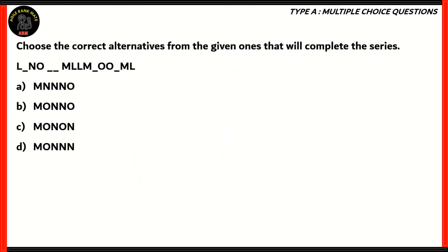Now let's look at the final question for the day. Choose the correct alternatives from the given ones that will complete the series. Let's look at the series itself and see if we're able to find out how the series should progress. If you look at this set of letters, you can see M followed by an L, followed by another L, and then followed by an M. You have a blank, and after that you have a double O. Both of these tell you that the series is repeating.